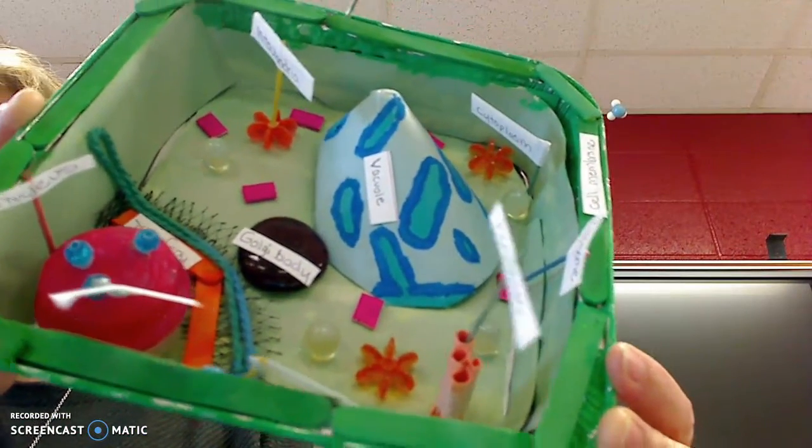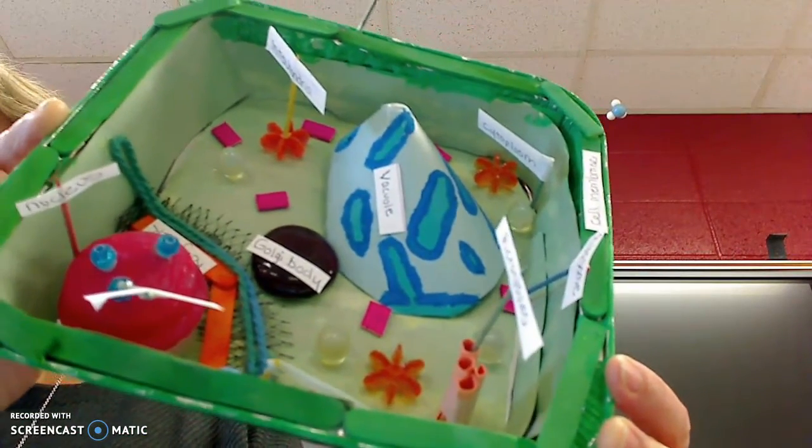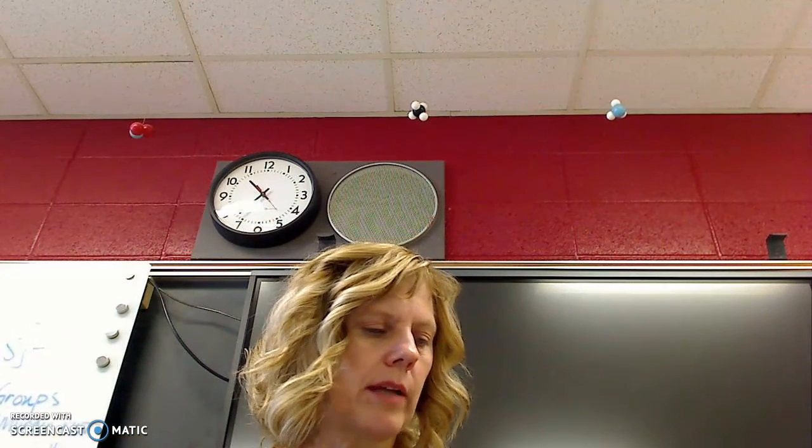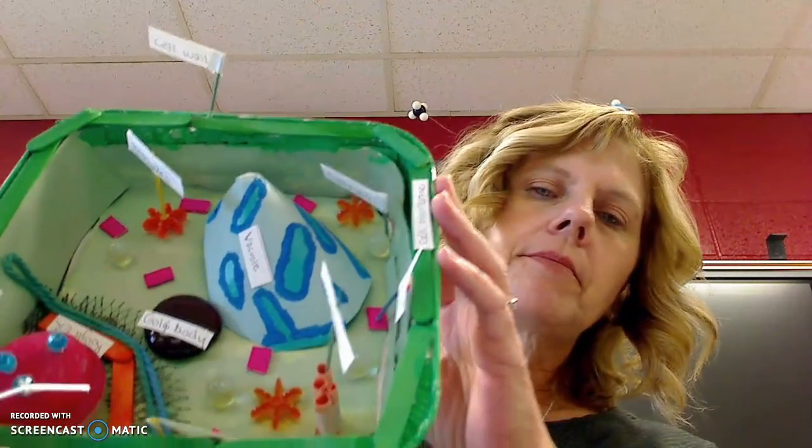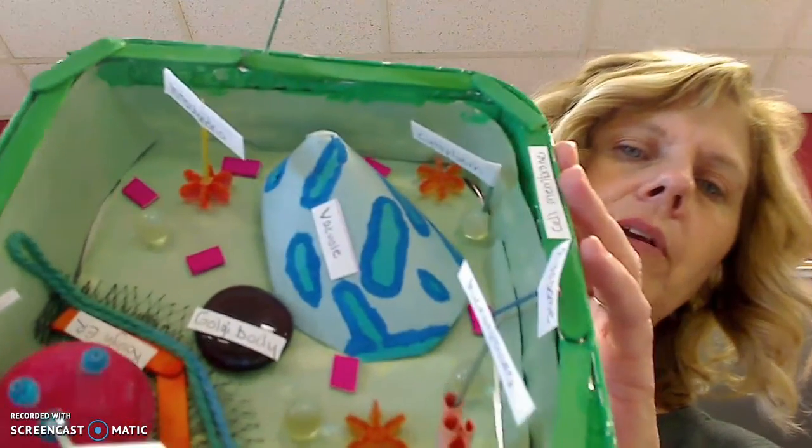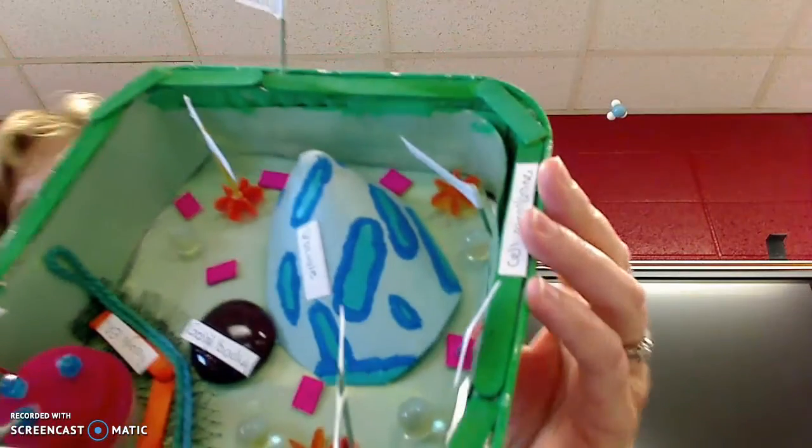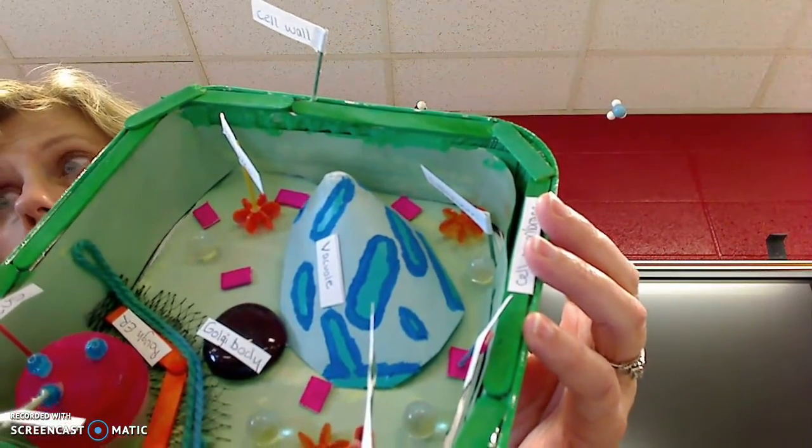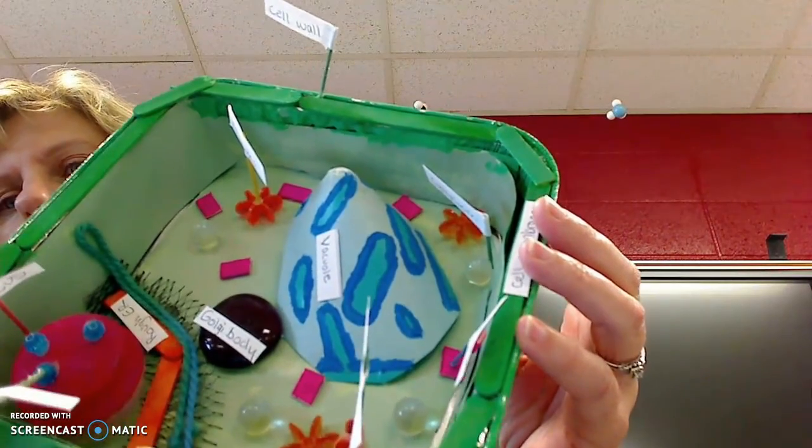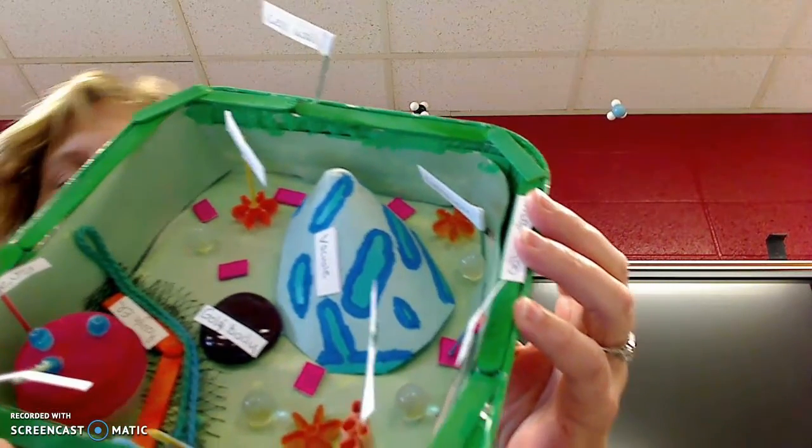But you can see the cell membrane, I don't know if you can see the cell membrane, cell wall, nucleus vacuole, all of the things that you would expect to find in a plant cell. And this person was very creative. This is what I would expect you to do. Don't run out and buy a kit. But instead, just use things that you have around the house that you can use to represent those organelles.